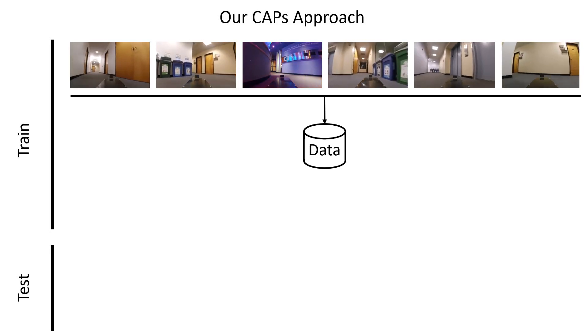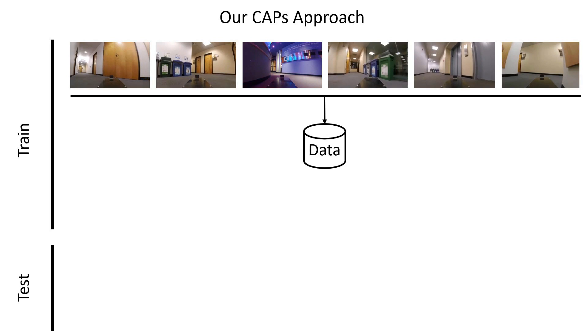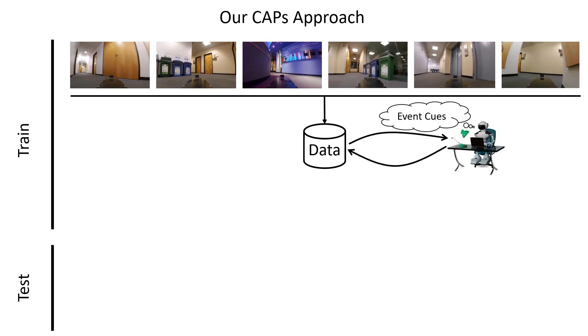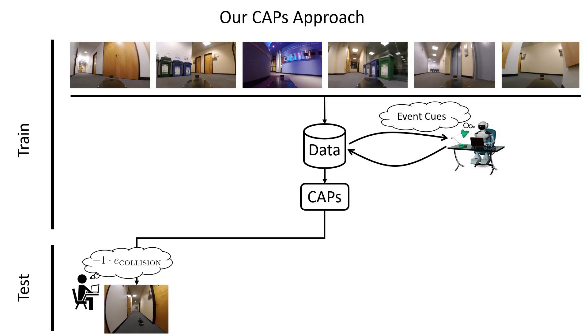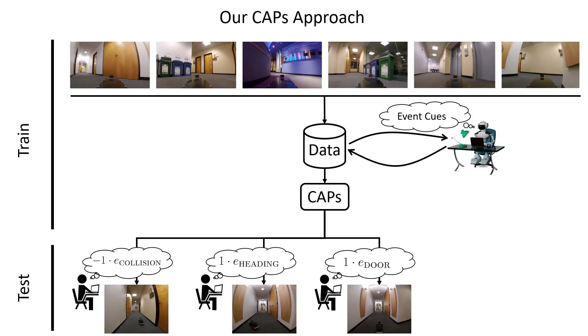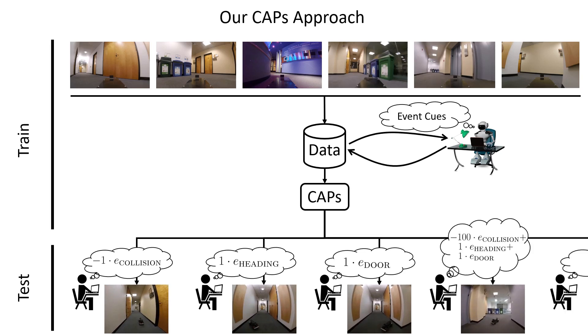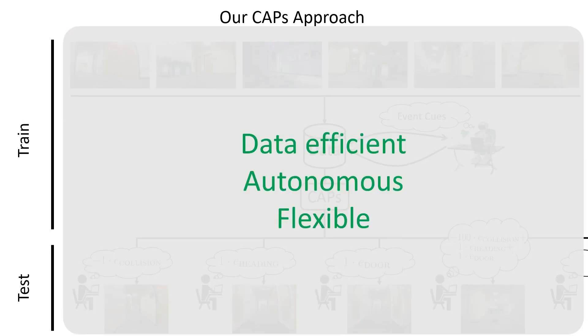Our Composable Action Condition Predictors approach seeks to address these shortcomings. In the training phase, the robot gathers data in the environment using any control policy. The CAPS system then autonomously labels relevant event cues in the dataset, and this data is used to train the CAPS model. Using this single CAPS model, the engineer can specify a variety of tasks in terms of event cues, and the robot will plan and execute actions that maximize the reward function. CAPS is data efficient because all data gathered by the robot can be used, autonomous because CAPS self-labels the event cues, and flexible because the desired task can be specified at test time.